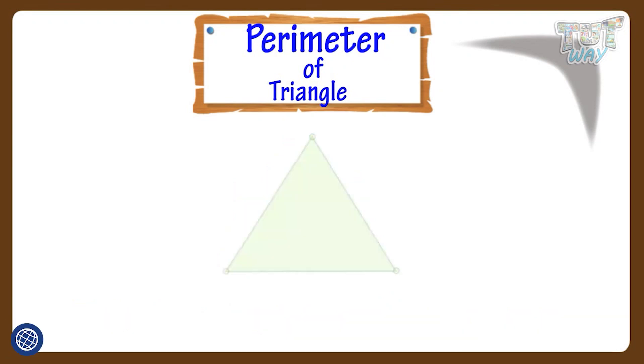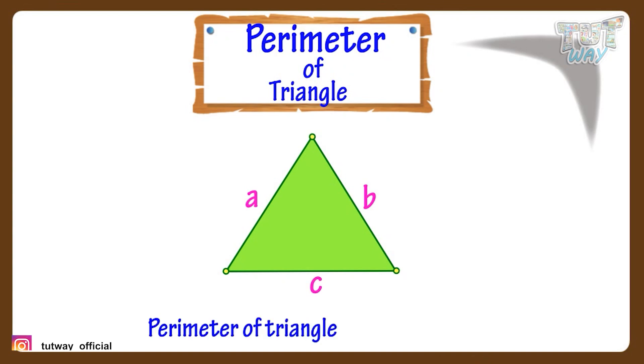Like here is a triangle with its sides A, B and C. So the parameter of this triangle will be A plus B plus C. That is sum of all the sides of a triangle. So the formula for finding the parameter of a triangle is A plus B plus C where A, B, C are lengths of sides of the triangle.